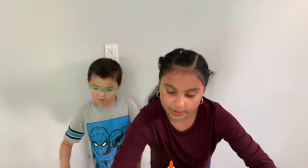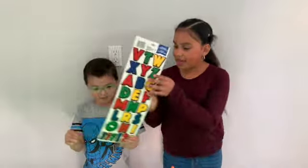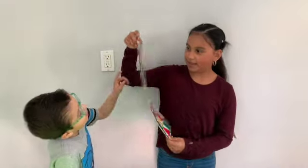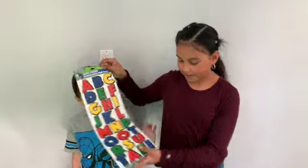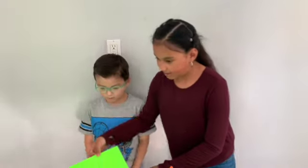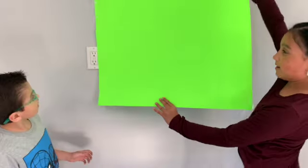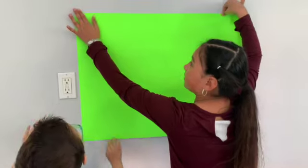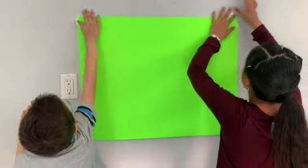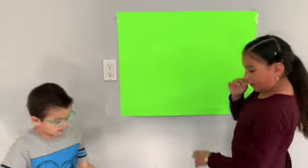We're going to be sticking the papers on with some tape, and we have the sticky alphabets — the letters in the back and in the front. Okay, first I'm going to stick my paper right over here, and make sure to stick on the top, on the side, and on the bottom.